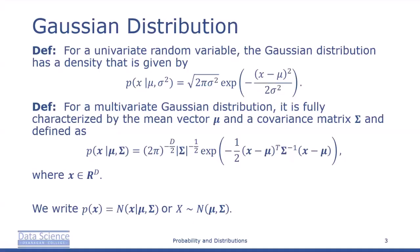For a univariate random variable, the Gaussian distribution has density given by: the probability of x given mean mu and variance sigma squared equals root 2 pi sigma squared, e to the negative x minus mu squared over 2 sigma squared. We can see that the Gaussian distribution is fully characterized by the mean and variance.